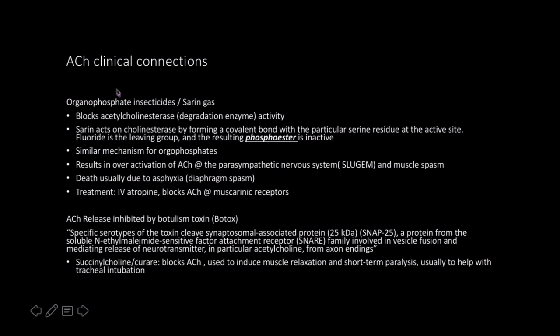There are so many types of questions a professor could ask about acetylcholine. One that's really common and clinically relevant — in terms of understanding acetylcholine and the autonomic nervous system — is organophosphate insecticides or sarin gas. These two are structurally very similar.